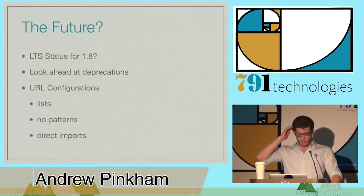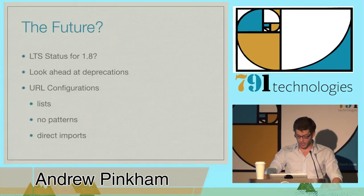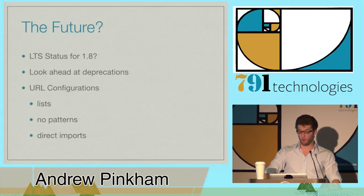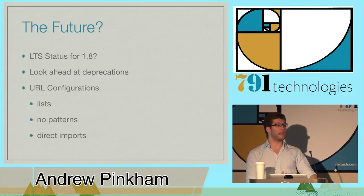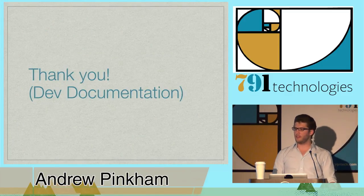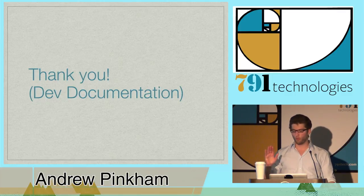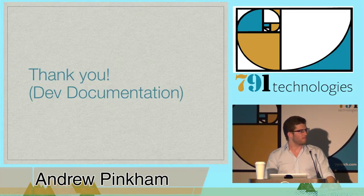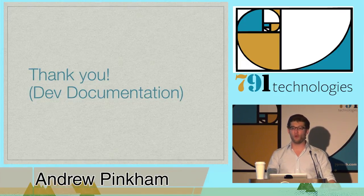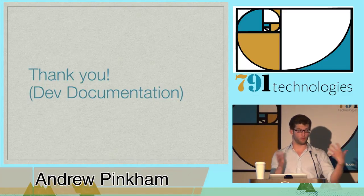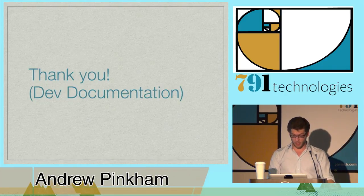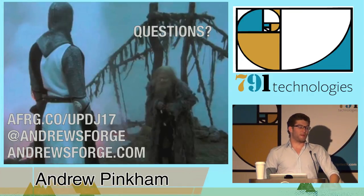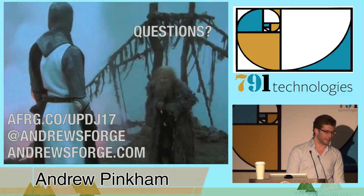It's also important to look ahead to the future. There is a deprecation release document on the Django website — it will tell you things like URL configurations are going to change in 1.8: there will be no patterns, just a list of calls to url(), and you'll need to use direct imports. Knowing that can help get your code right before it's even released. I'd like to thank the developers who documented all their changes. Aymeric wrote a fantastic email, Russell wrote a fantastic set of emails about the changes, and Andrew Godwin documented everything on his blog. I really hope that the DEPs — like Python Enhancement Proposals but for Django — come along, because that documentation would be even better. Questions?